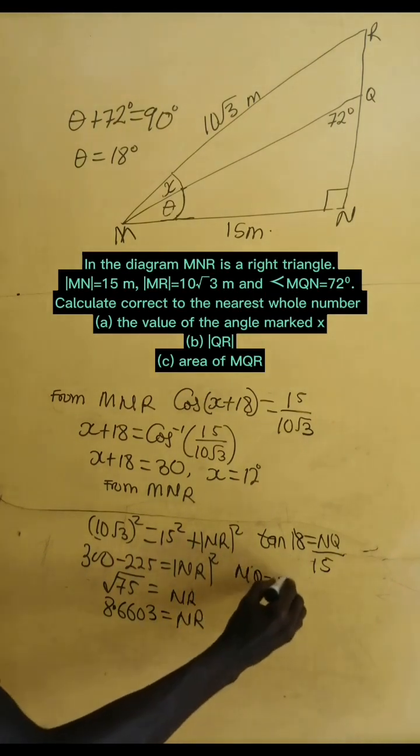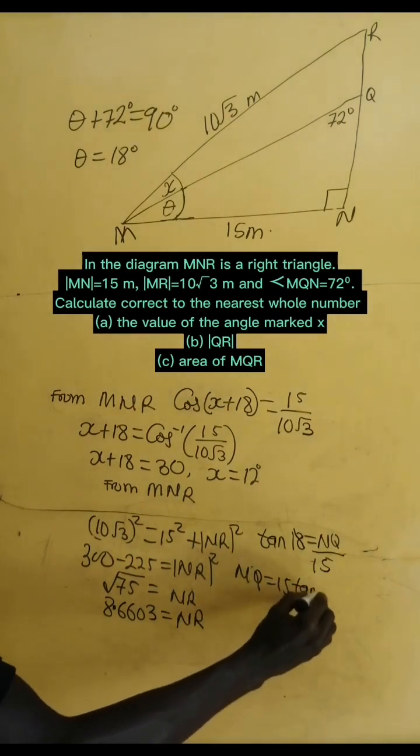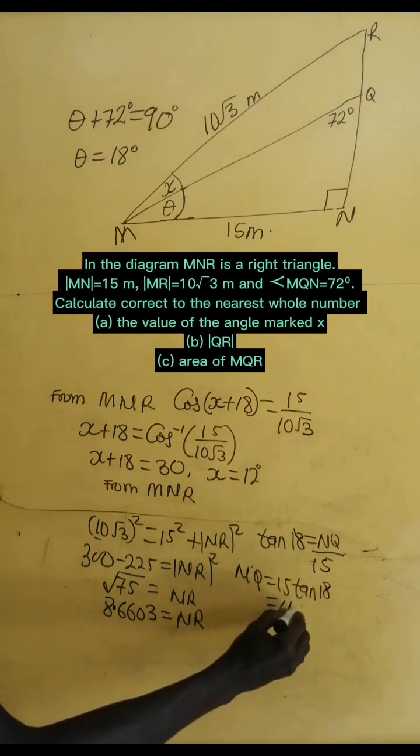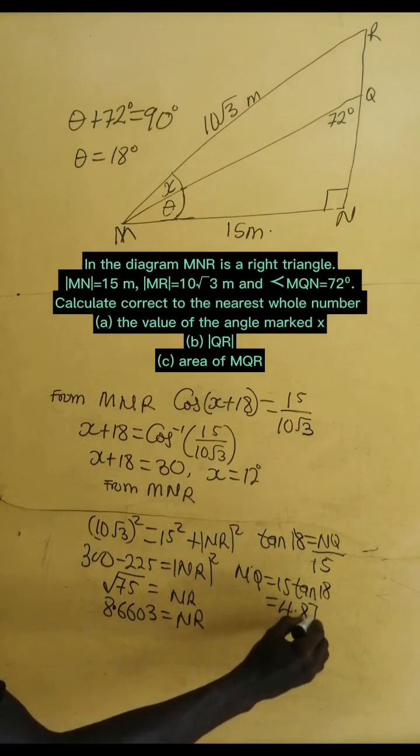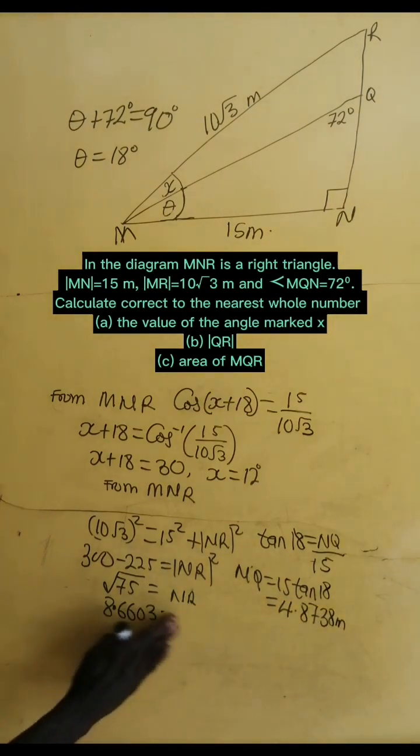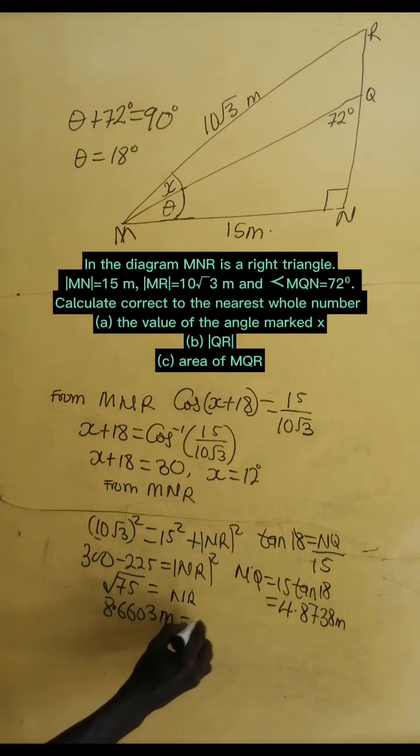So, we multiply 15 by tangent of theta, sorry, tangent of 18. That gives us NQ. And this is 4.8738 in meters.